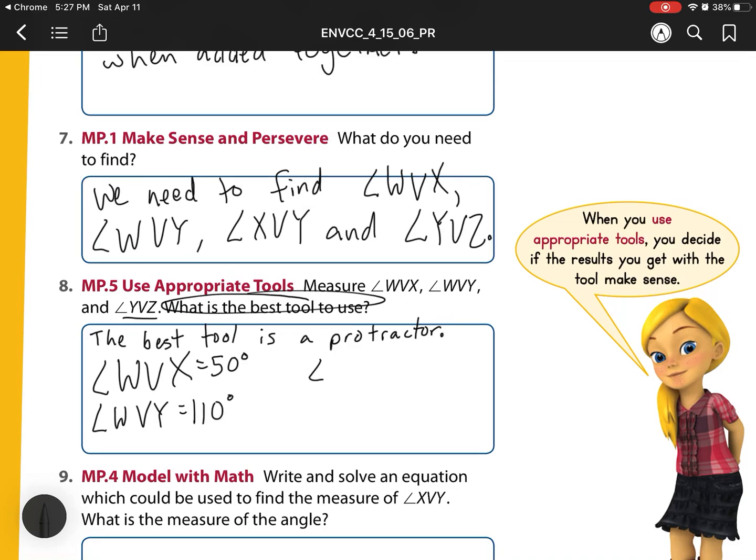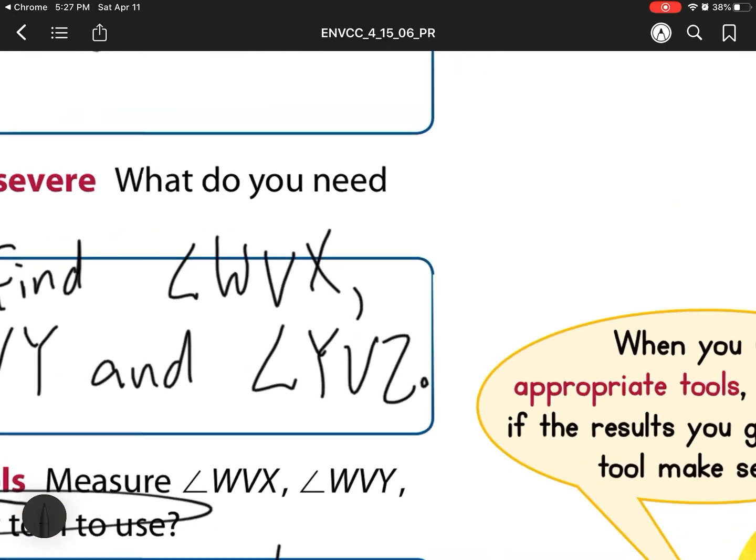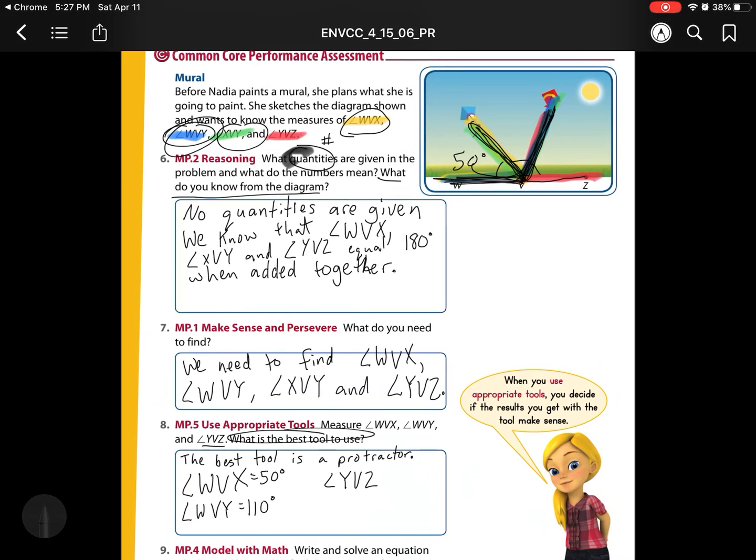And then our last one is angle YVZ. So let's check which one that was. YVZ was this red one, which is this very last angle right here. And when I use my protractor to measure that, I get 70 degrees.